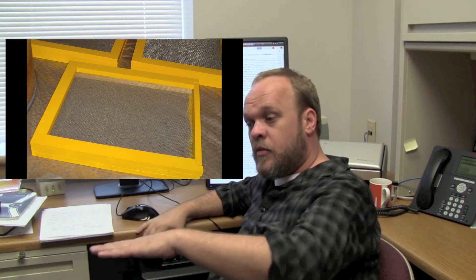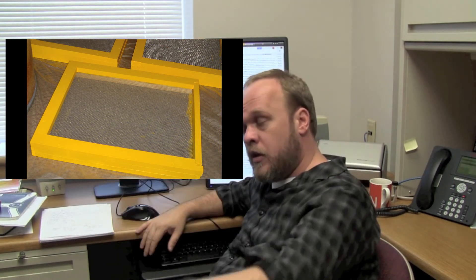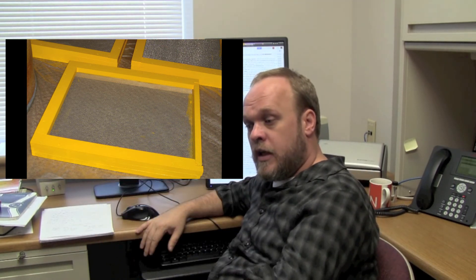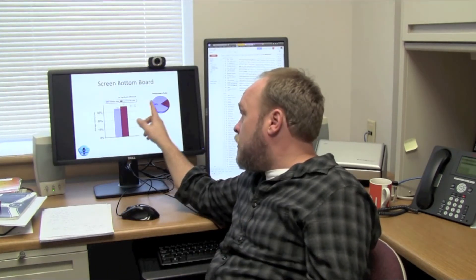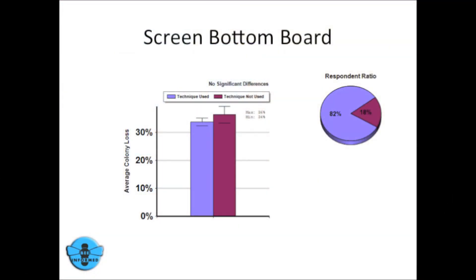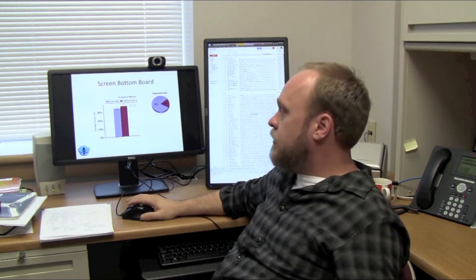Screen bottom boards—again, this is a technique that was developed to help control varroa mites. Basically, a screen at the bottom board so mites can fall through the colony and don't land on the bottom board where they can jump back on the bees, but rather just pass right through. Quite a few beekeepers, 82% of beekeepers, use this technique. You can see, however, they did not see a significant difference between those who did use it and those who did not.